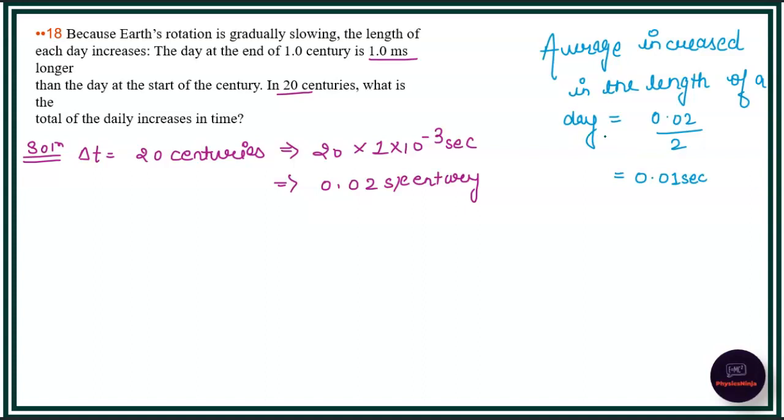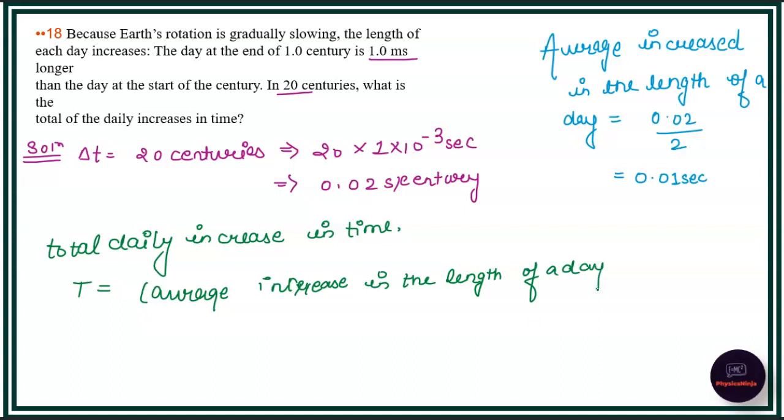Now, we have to calculate the total daily increase in time. T equals average increase in length of a day times number of days. Now, we have 0.01 seconds, and this will be containing like one day.